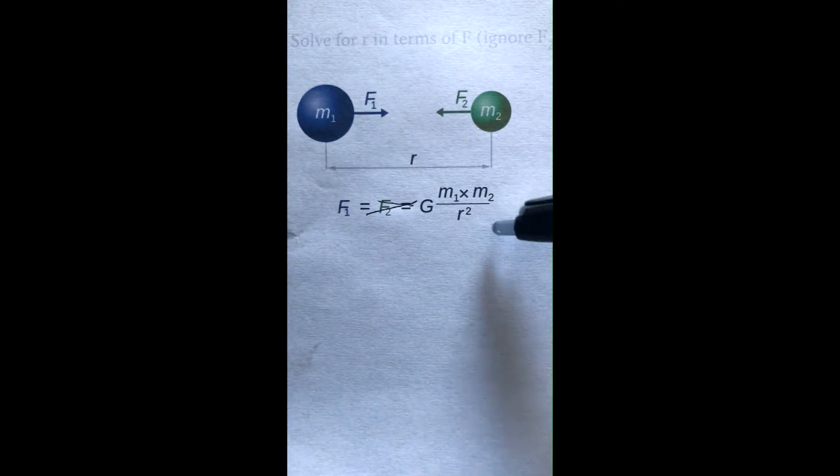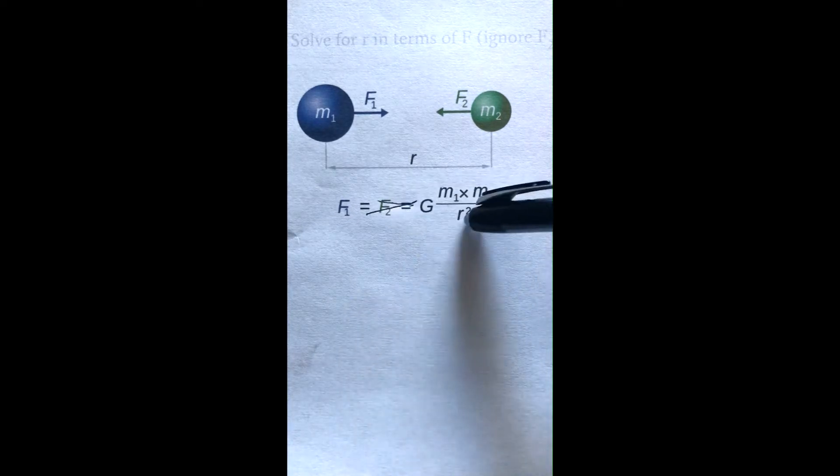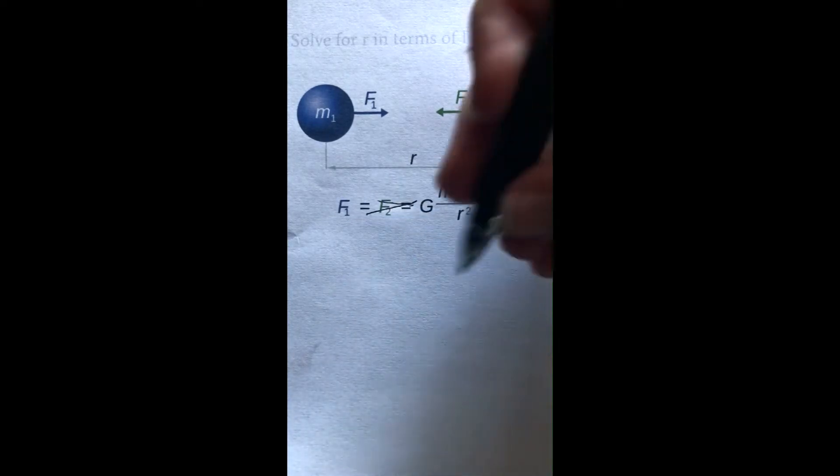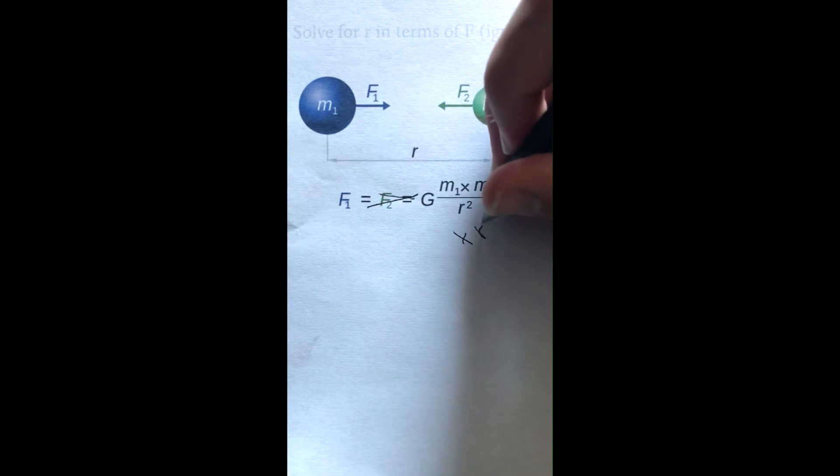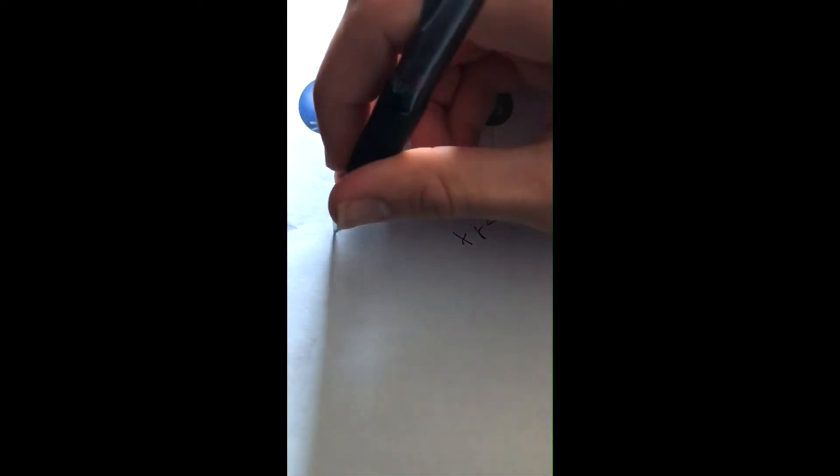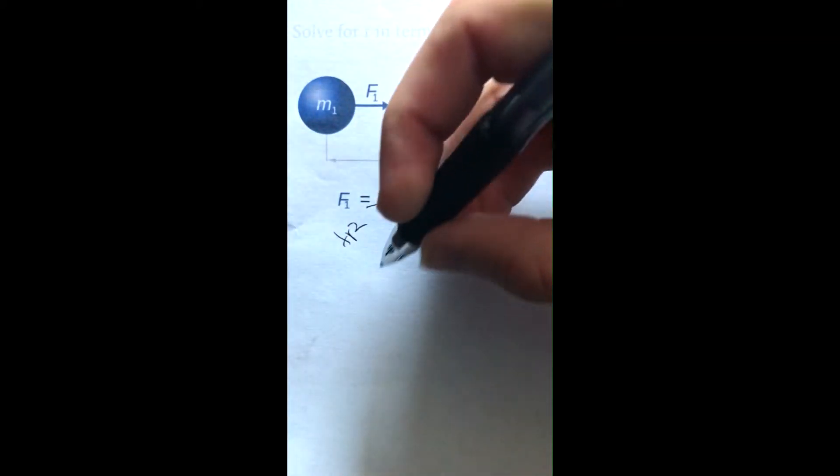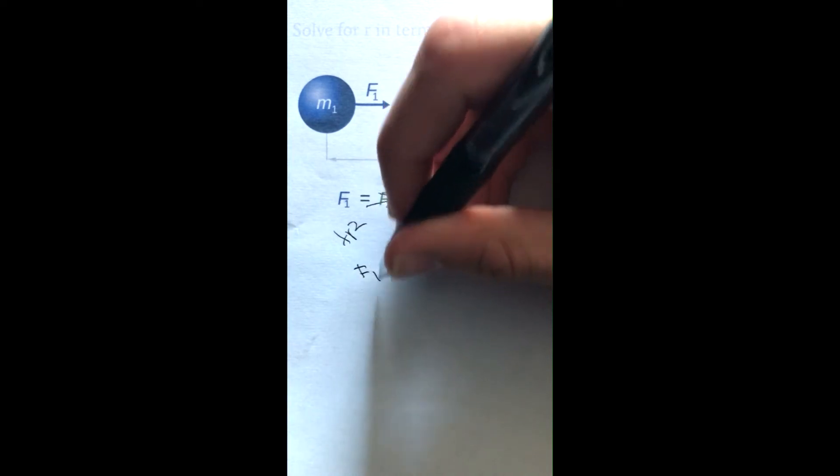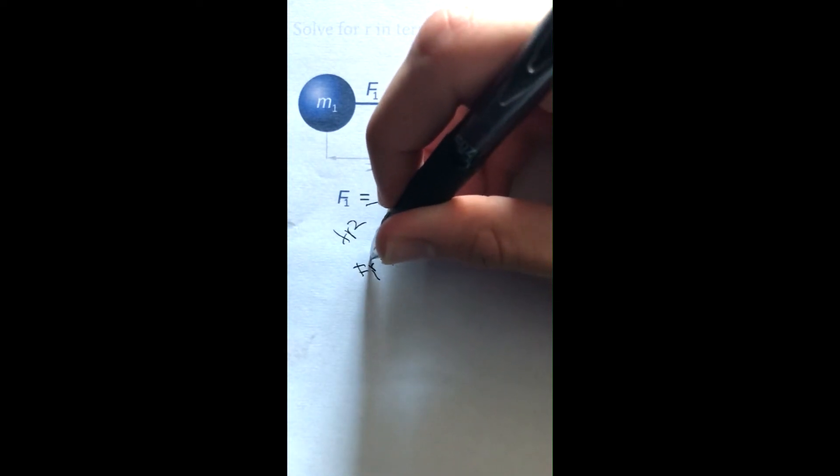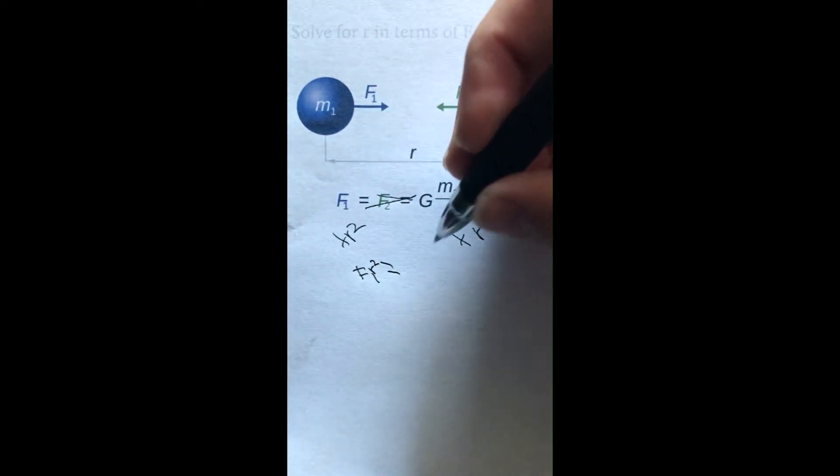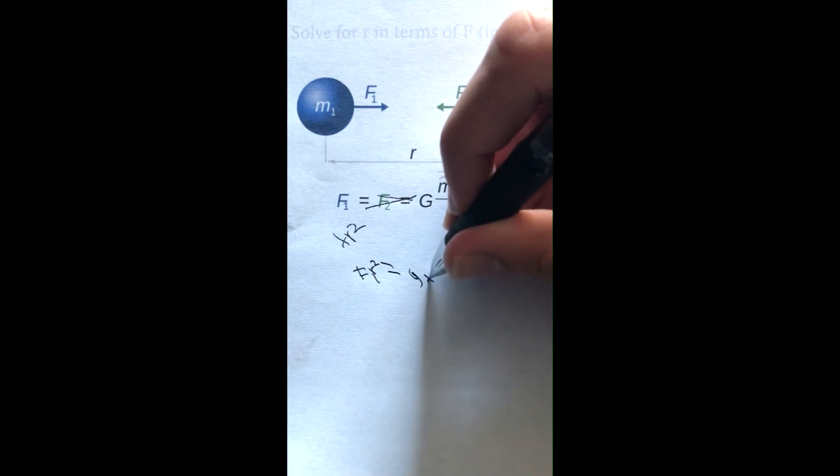The next thing you do is get r² to the other side of the equation. You multiply both sides by r² to get F₁ times r² equals G times m₁ times m₂.